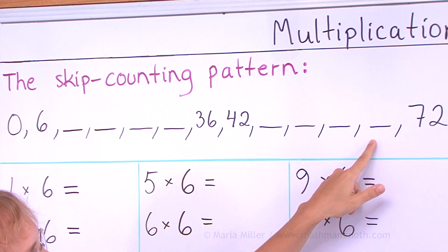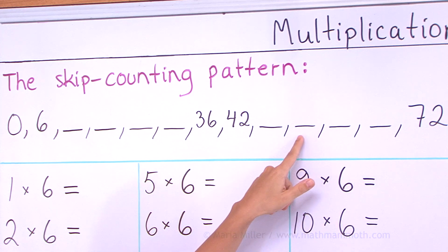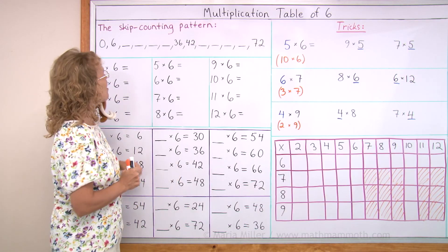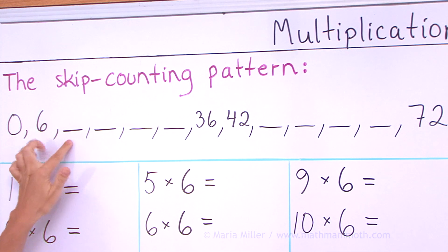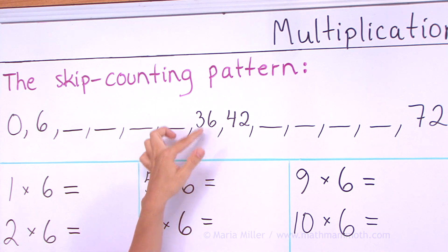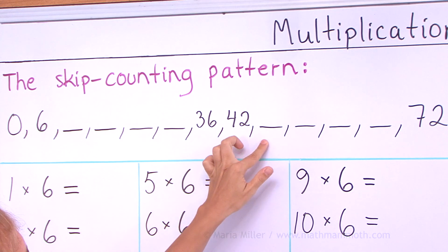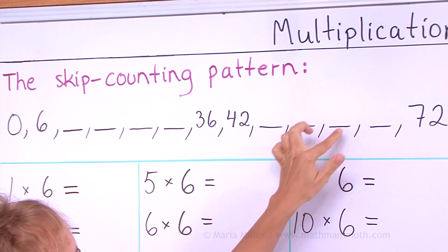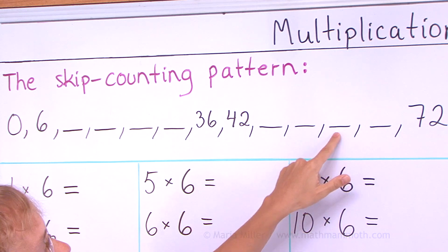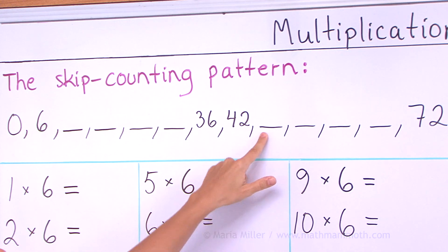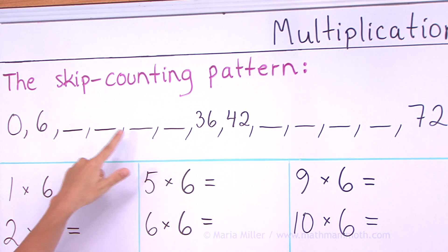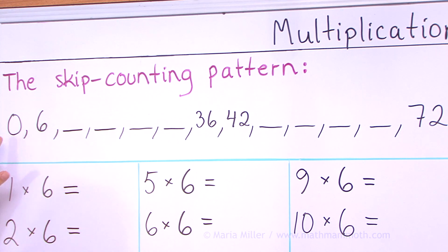72 ... and 42. And now from the beginning till the end: 0, 6 ... 36, 42 ... and 72. And then backwards: 72 ... 42 ... 6, and 0.